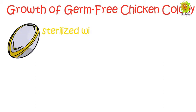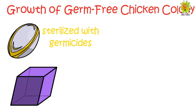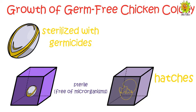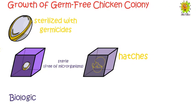The establishment of a germ-free chicken colony is much easier compared to other mammals. Since a chick hatches from an egg, the egg is first sterilized with a germicide and then placed inside a sterile isolator. When the chick hatches, it is already sterile and able to feed by itself. It is important to ensure the chicken colony remains germ-free by conducting regular biological examinations.